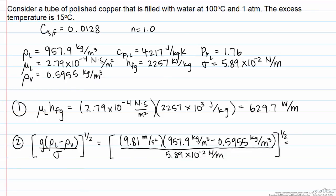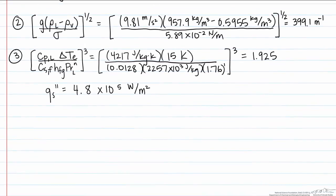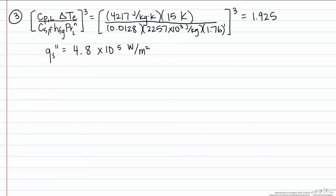Let's calculate the other two parts of the equation. This second term is equal to 399.1, and finally this third term is equal to 1.925. When we multiply these all together, we get for our heat flux 4.8 times ten to the fifth watts per meter squared.